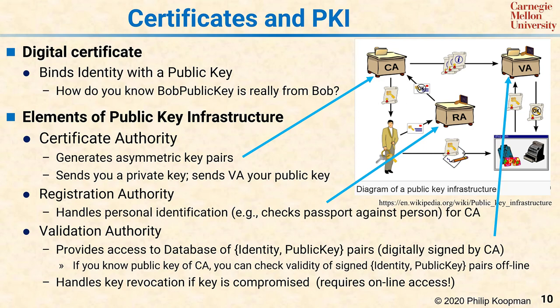The subtle point here is why we needed to sign the identity-public-key pairs. One reason is that you might cache local copies or distribute local copies, so you don't actually need online access to the VA. All you need is the ability to check a digital signature to make sure that the identity-public-key pair is legitimate.